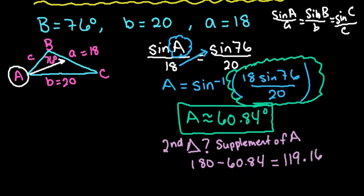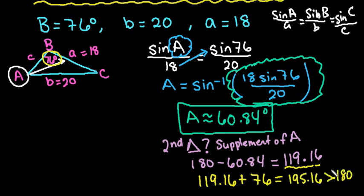So I want to see, can I form another triangle that has an angle of measure 119.16 with the given angle measure that we already have? So if I add these two together and they have a sum that is less than 180 degrees, then I can have a second triangle. If it's greater than 180 degrees, then I cannot have a second triangle. So when I add these two together, I get 195.16 degrees, which is greater than 180. So there is not a second triangle.